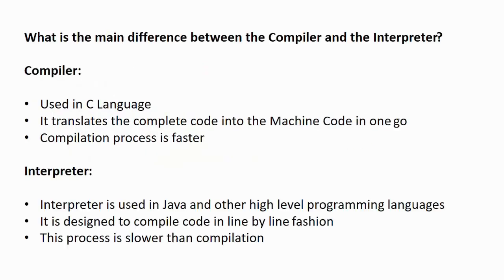Next question: what is the main difference between a compiler and an interpreter? A compiler, used in C language, translates the complete source code into machine code in one go, making the compilation process faster. An interpreter, used in Java and other high-level languages, compiles the code in a line-by-line fashion, making it slower than compilation. Both are used to compile source code into machine code, but the key difference is that a compiler translates the whole code at once while an interpreter does it line by line.